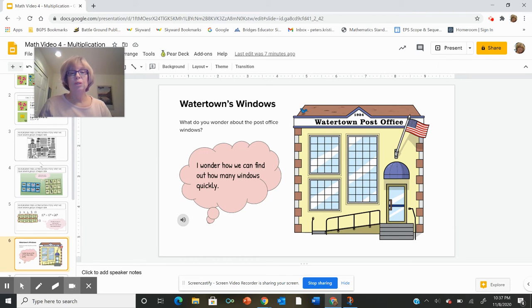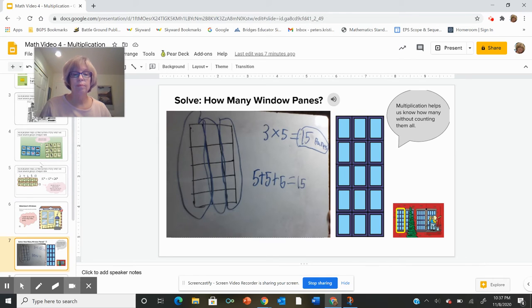So from there, we went to Watertown's windows and Lolly the window washer. And again, we're trying to figure out how many panes are in those windows without counting by thinking about how many rows are there and how many are in each row?